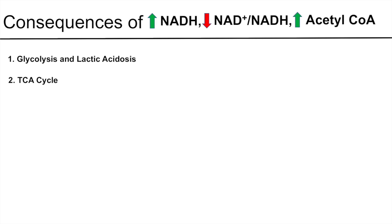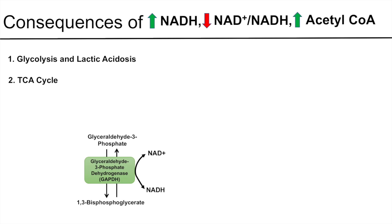In the glycolysis pathway, there is a reaction involving glyceraldehyde-3-phosphate. The enzyme GAPDH, or glyceraldehyde-3-phosphate dehydrogenase, processes glyceraldehyde-3-phosphate into 1,3-bisphosphoglycerate. This is a reversible reaction that requires NAD+, which gets reduced to NADH. However, when there is an excess of NADH, this reaction is pushed in the opposite direction, leading to increased glyceraldehyde-3-phosphate and ultimately reducing glycolysis.